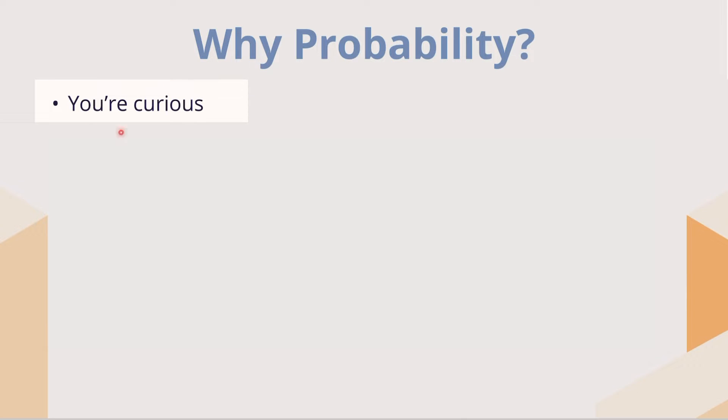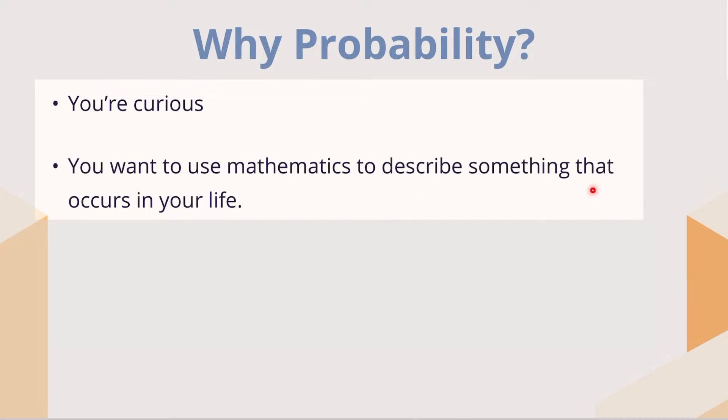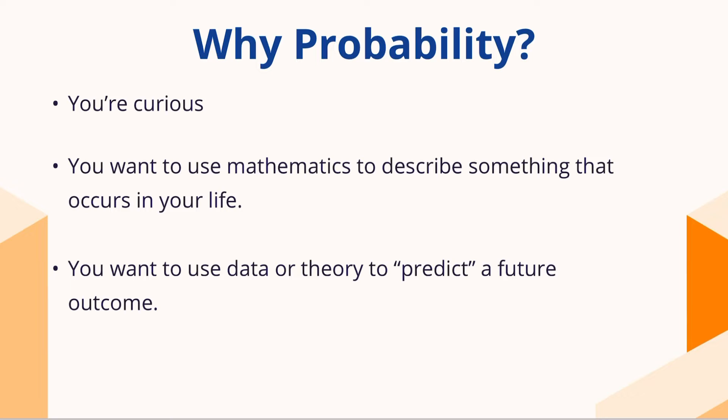The first option could be that you're curious about probability. You like the idea of probability, you've always found it intriguing — this idea of chance or predicting the future based on repeated performances. Maybe that's what you're really passionate about. You want to use mathematics to describe something that occurs in your life. That's the whole point of the IA — you're going to use mathematics to describe this, and maybe probability is the best way to describe what you're looking to do. Or you want to use data or theory to predict a future outcome — applying the theoretical probability you've seen in class to something you find interesting.